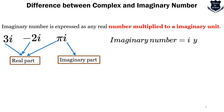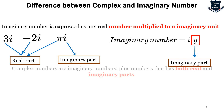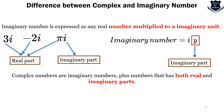For example, the imaginary number i·y, where y is the real coefficient. Complex numbers, on the other hand, include imaginary numbers plus numbers that have both real and imaginary parts. This is where the main difference lies.